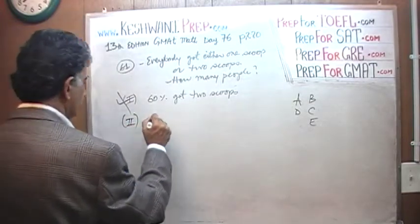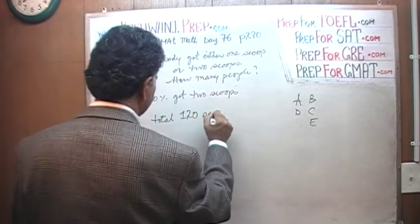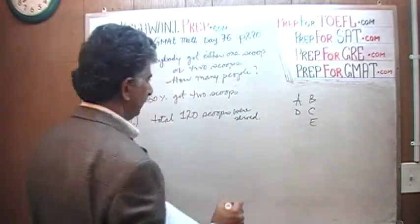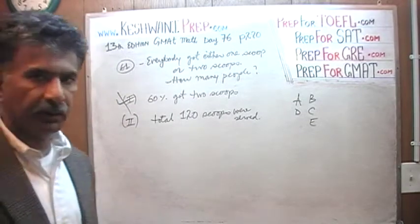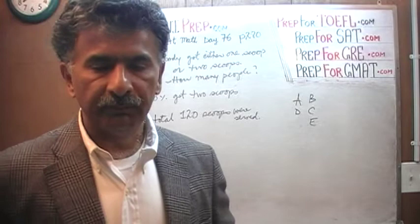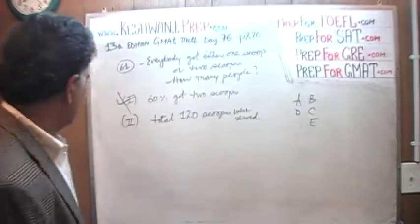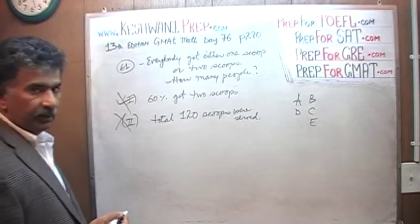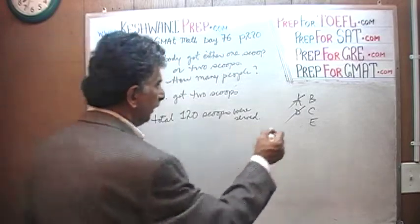The second statement tells us the total of 120 scoops were served. The second statement by itself does not do anything. By itself, it does not do anything because now we know that 120 scoops were served, but we don't know how many people got one scoop and how many people got two scoops. Before we can figure out how many total scoops were given, we need to know the breakdown. How many got one scoop, how many got two scoops. We do not know that. The second statement by itself is also no good. So the first statement by itself was not enough, that means the answer cannot be A or D. We just found out the second statement by itself is also not enough. The answer cannot be B.